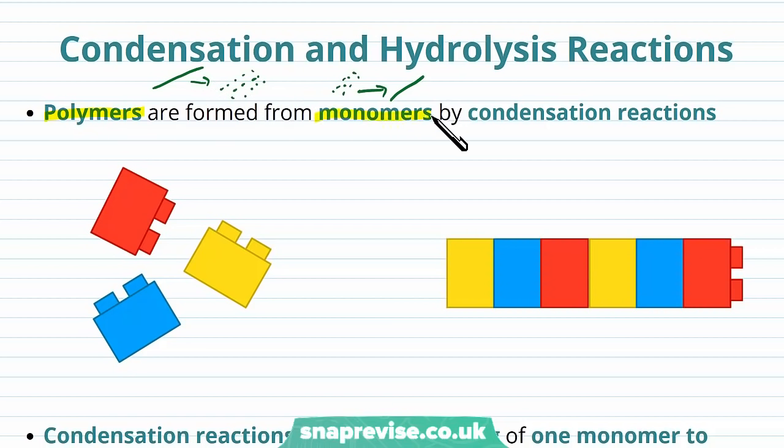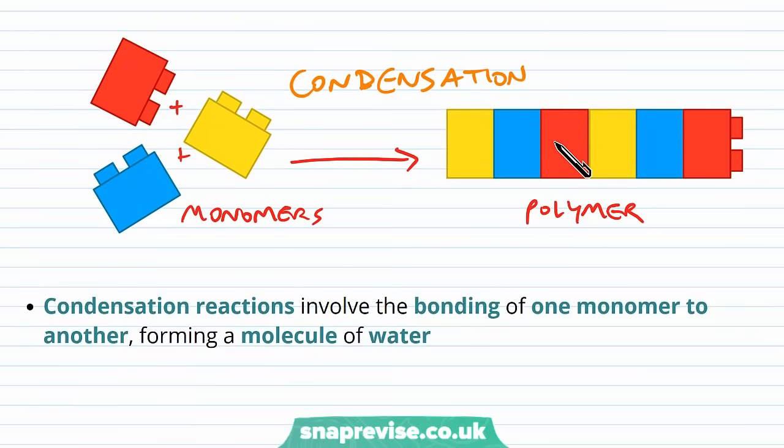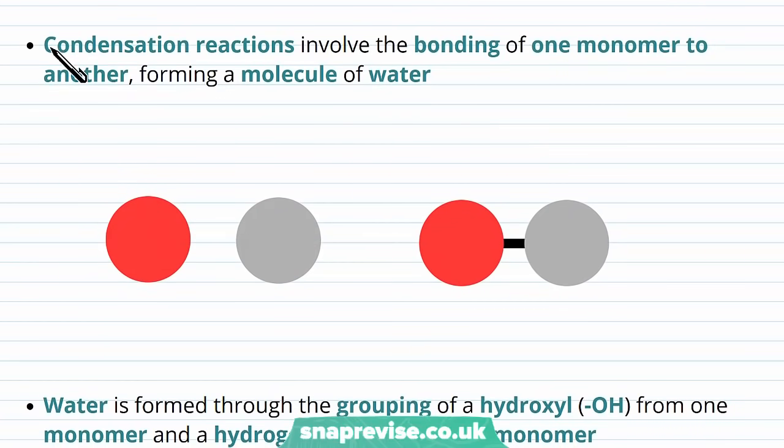So we've said that polymers are formed from monomers and this is done by what we call a condensation reaction. So there'll be two types of reaction we need to talk about, one where we build and one where we destroy. So when monomers come together and they form a polymer, we call this condensation. And a condensation reaction has particular features. In a condensation reaction, there is a bonding of one monomer to another. Whether that other monomer is on its own or it's the end of a chain, it doesn't matter. So a monomer is bonding on to either an existing chain or another monomer. And when this happens, not only does the bond form, but a molecule of water is formed in the process too.